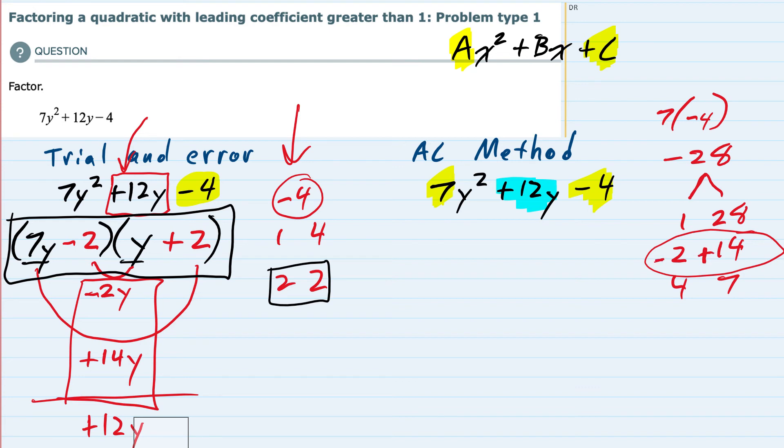So now I can rewrite our equation as 7y². And I'm just going to copy these over. If one's a positive and one's a negative, it may be a little easier to put the negative one first. A negative 2y plus 14y minus 4.